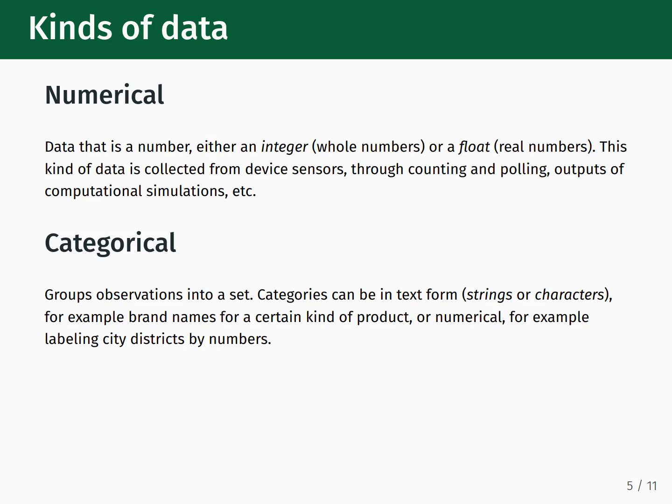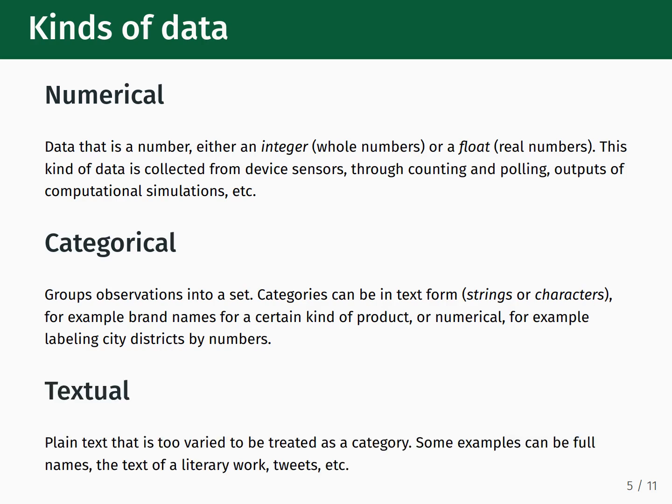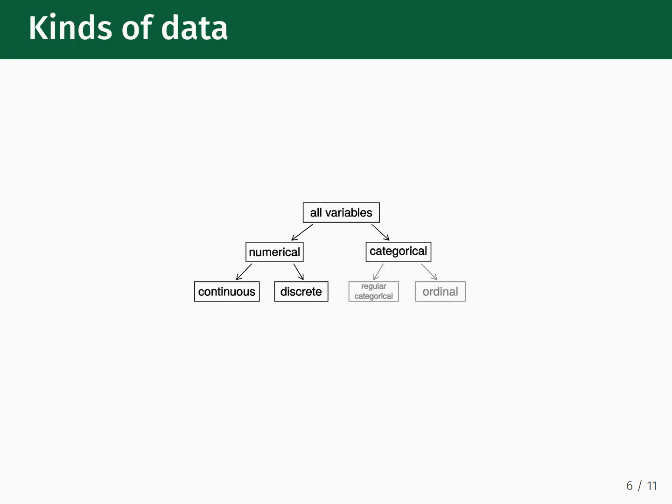Next up is categorical data. Categorical data allows us to group observations into a set. Categories can be in a textual form — for example, brand names for a certain kind of product — or they can be numerical, for example as a way to label city districts. We also can have textual data, meaning plain text that is too varied to be treated as a category. Some examples of this would be people's full names, the text of a full literary work, and tweets. This schematic shows us that numerical and categorical data, which will be the primary forms we encounter in this class, actually break down into even more distinct categories.